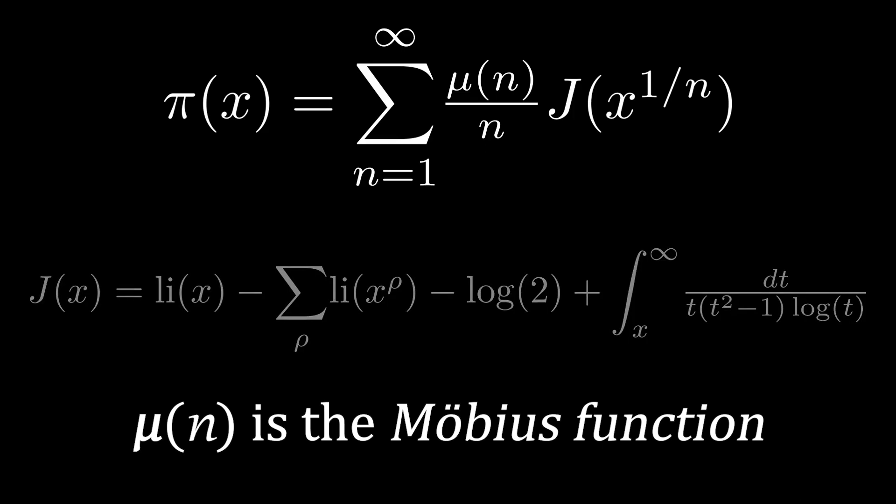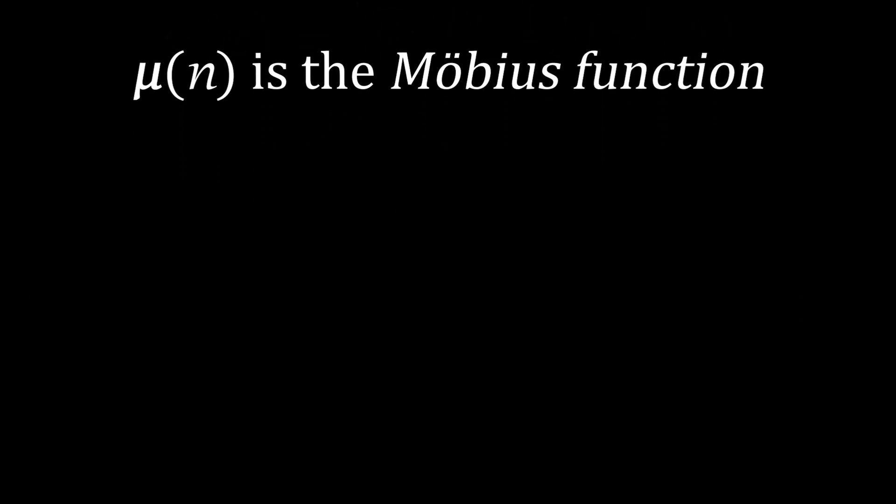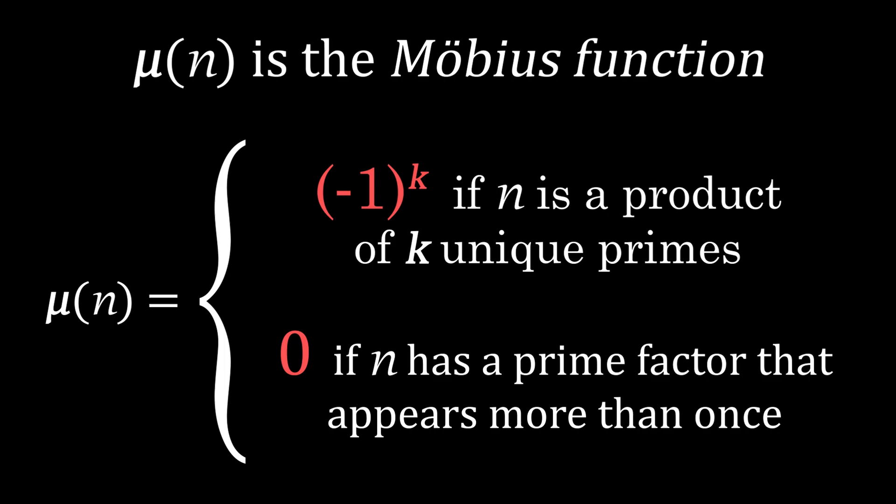The Möbius function, μ of n, is equal to negative 1 to the power of k if n has k distinct prime factors, and is equal to 0 if n has a prime factor that appears more than once. Remember that by the fundamental theorem of arithmetic, all natural numbers greater than 1 have a unique prime factorization.